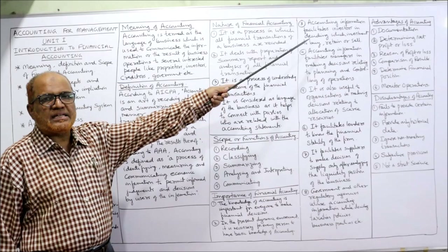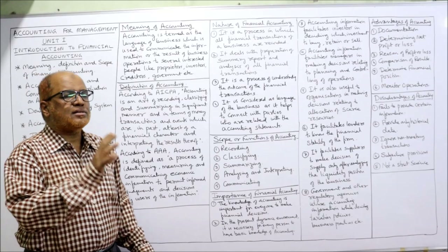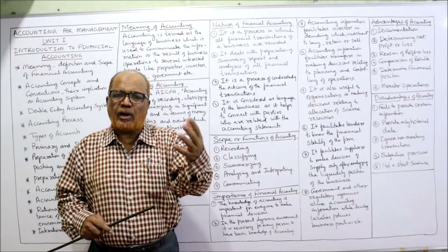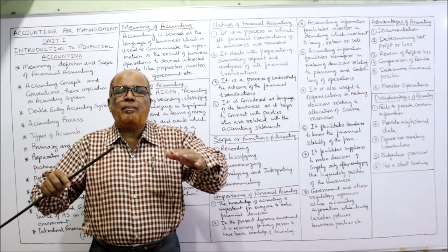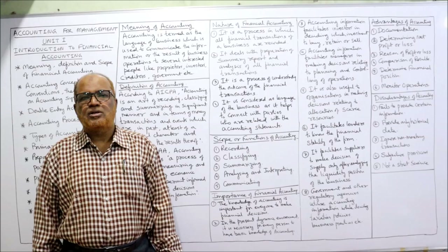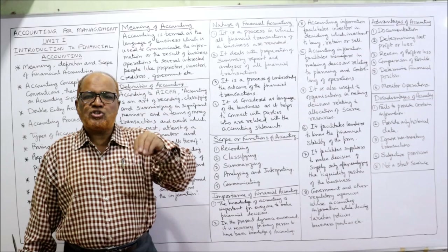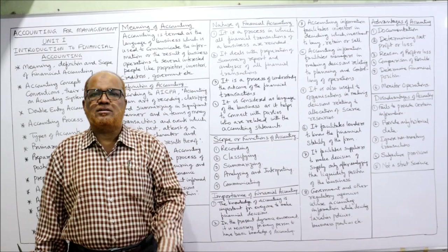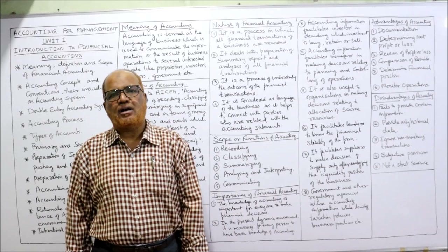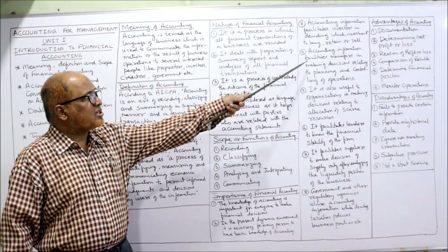Third, accounting information facilitates informed investors in deciding which investments to buy, retain, or sell. More and more people are investing in capital markets in the form of shares. Before investing, an investor wants to evaluate which company's shares to buy, sell, or retain — and these decisions are taken on the basis of accounting information provided by the company.